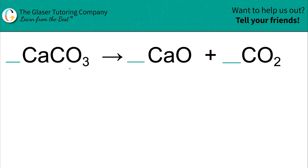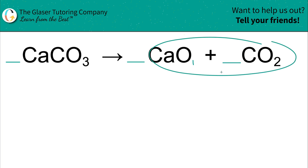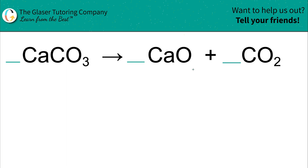Last but not least, now we're going to move on to oxygen. Oxygen here — we have three oxygens on the left, and we have one oxygen here and two oxygens there, so you have to add them everywhere. Anyway, oxygen is balanced. So guess what? This equation is actually already balanced. You can plug in ones there if you like, or you can just leave it alone.